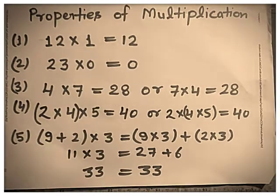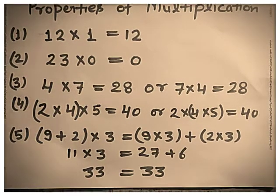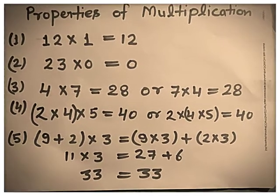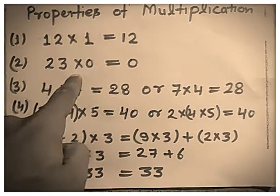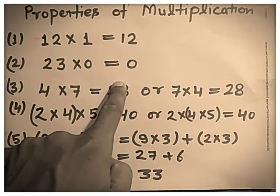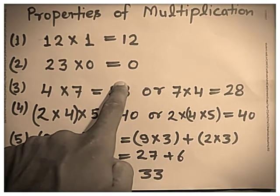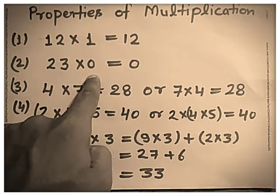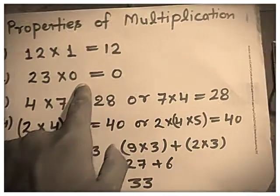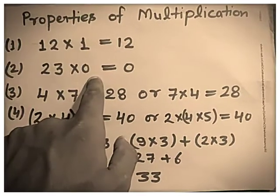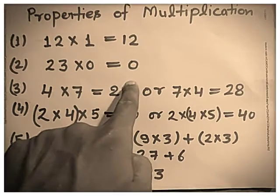Now, the next property of multiplication is: the product of a number and 0 is equal to 0. For example, 23 multiplied by 0 is equal to 0. When we multiply any number by 0, we get 0. 2000 multiplied by 0 is 0. 1 lakh multiplied by 0 is 0, and so on.